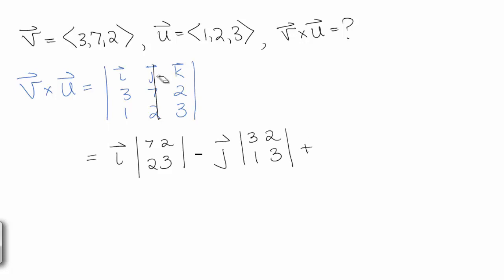Then we're going to do the same thing for the K component. We'll cross out the row and column that K is in, and we'll have the K component being 3, 7, 1, 2.